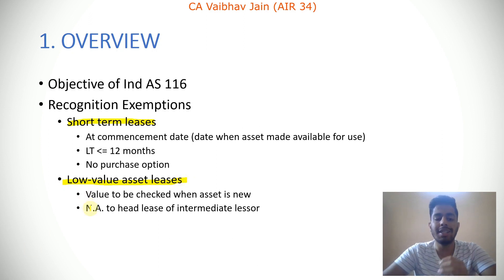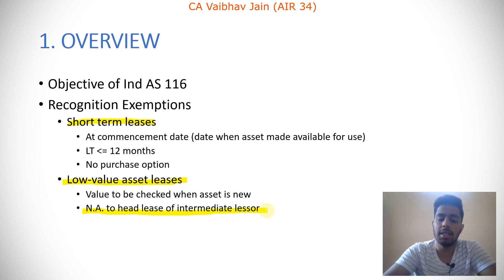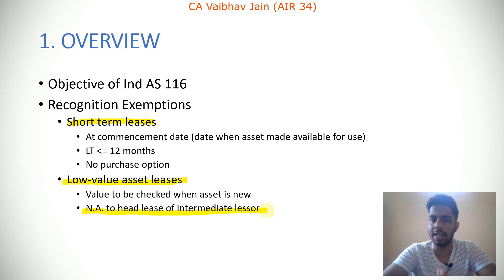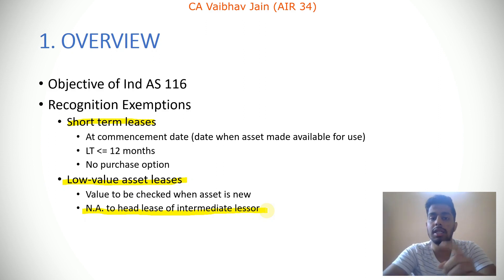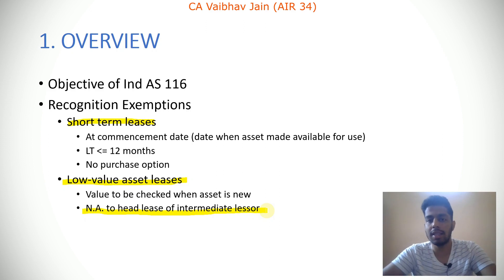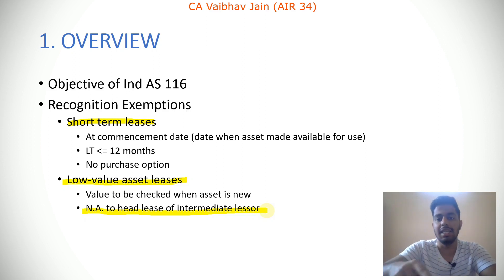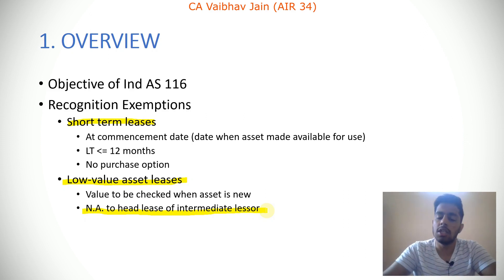The low-value asset lease exemption is not available to the head lease of an intermediate lessor. For example, if I am giving an asset on lease to you and you are giving it to someone else, there are two lease transactions. The lease between you and me is the head lease; you act as the immediate lessee to me and as an intermediate lessor to the third party. For the intermediate lessor, the low-value asset lease exemption cannot be availed in the head lease. In the sub-lease between you and the third party, you may avail the exemption, but not in the head lease.